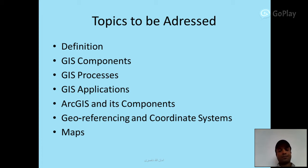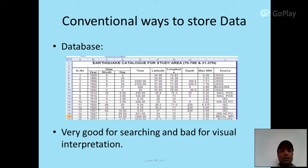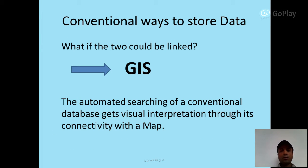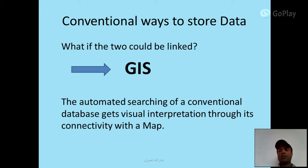Conventional ways to store data: maps are very good for visual interpretation but bad for searching. Databases are very good for searching but bad for visual interpretation. What if the two could be linked? GIS is the automated searching of a conventional dataset — a database — with visual interpretation through its connectivity with a map.